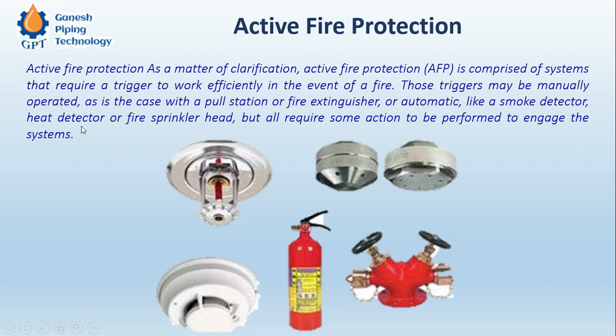As a matter of clarification, active fire protection is comprised of systems that require a trigger to work efficiently in the event of a fire. A fire extinguisher, for example, is also active fire protection, but it is not automatic — a person must break the cock to make it functional, and then foam or dry chemical is sprayed on the flames to extinguish the fire. This type requires direct involvement of personnel.